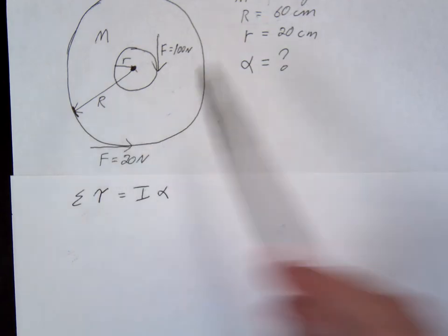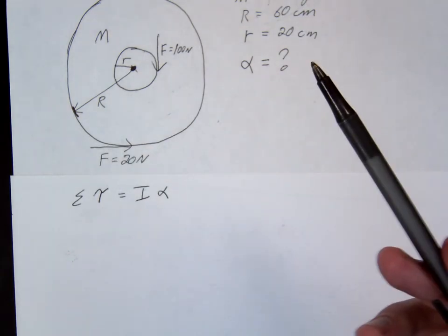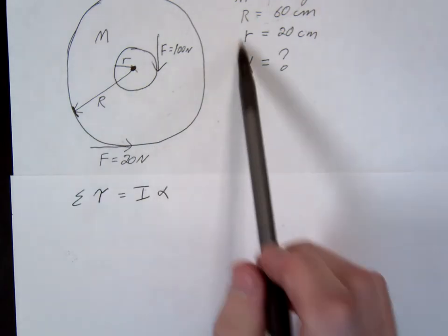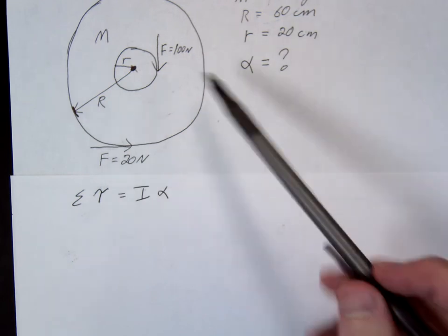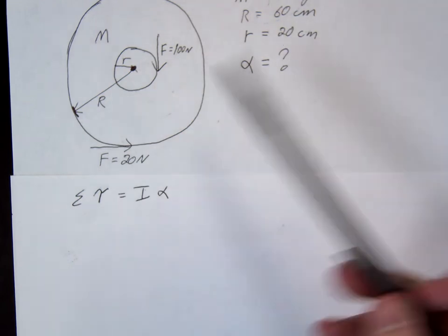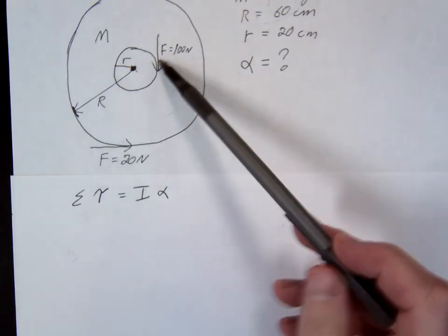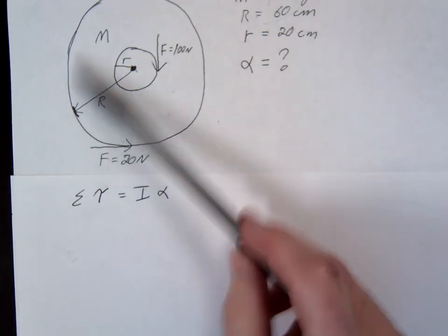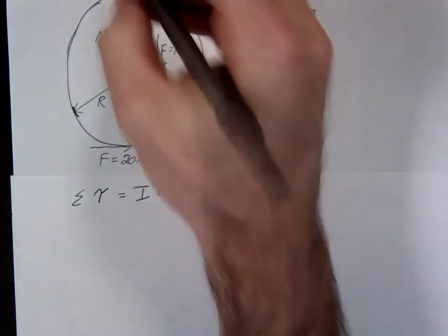You have to define your positive and negative direction. The convention typically says counterclockwise is positive. However, I like to look at the problem and see what direction the motion is. This is a greater torque than this, so the ultimate direction will be clockwise. I'm going to define clockwise as positive.